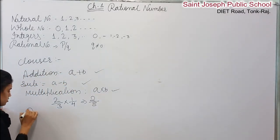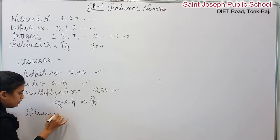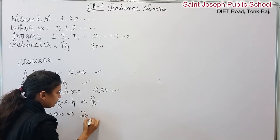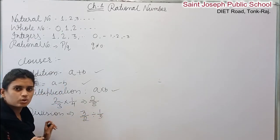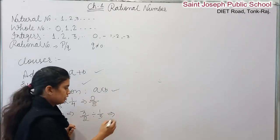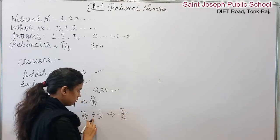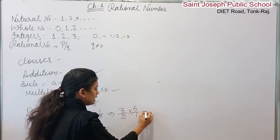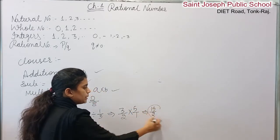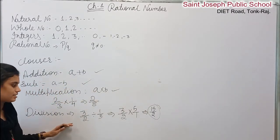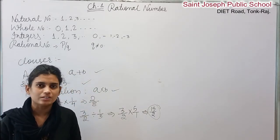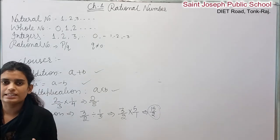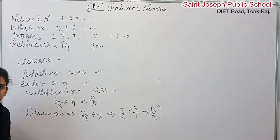Now we talk about division. For division, take 3 by 2 divided by 1 by 5. As we learned in the previous class, division becomes multiplication by the reciprocal, so 3 by 2 multiplied by 5 by 1. We get a rational number. However, division does not always satisfy closure — because if the denominator becomes 0, the result is not defined. So this is the closure property, satisfied for addition, subtraction, and multiplication.